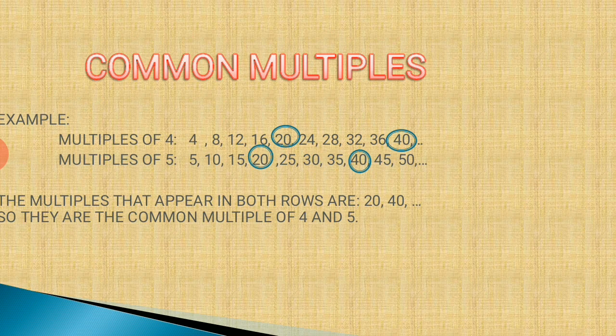Now common multiples. Let's understand this with the help of an example. The multiples of 4 are 4, 8, 12, 16, 20, 24, 28, and so on. The multiples of 5 are 5, 10, 15, 20, 25, 30, 35, 40, and so on. Now 20 appears in both and 40 appears in both. So the common multiples of 4 and 5 are 20 and 40.